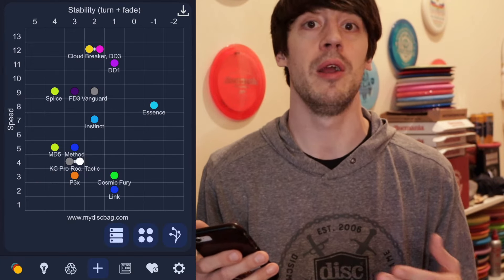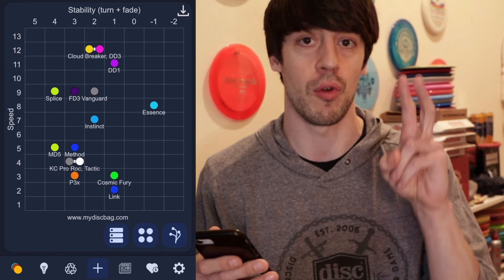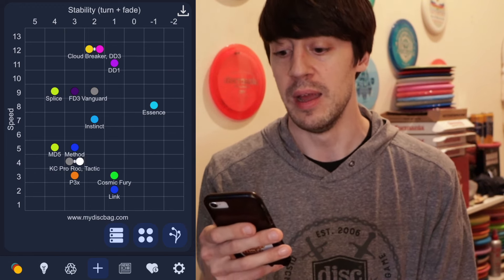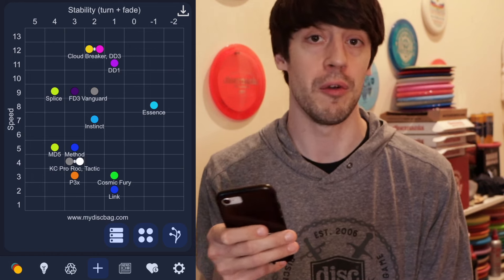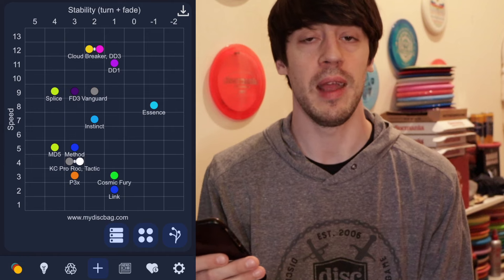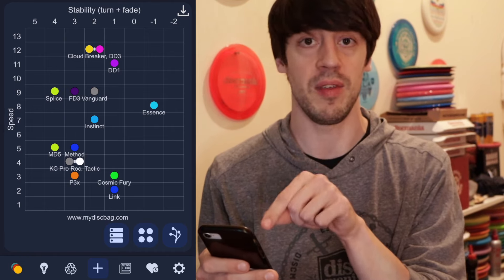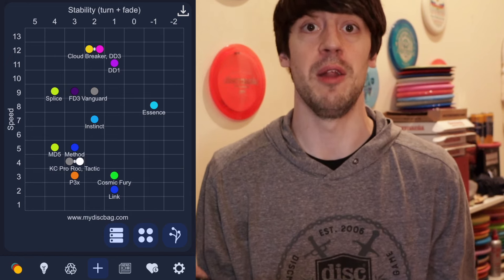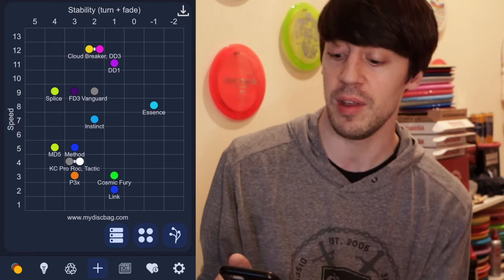For a brand new player, an amateur player, even a pro player, you might not really realize what gaps or what holes you might have in your bag. And even for me like up top the cloud breaker and the DD3, they're really similar. But same thing as my KC Pro Rock, my DD3 is a little bit flippier than what it says here. And the cloud breaker, the new Gannon Burr cloud breaker that I just put in is probably a little bit more overstable than it says here.